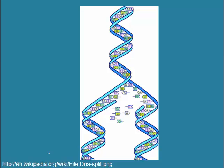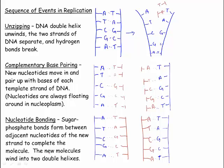There are three steps to DNA replication: unzipping or unraveling of the molecule, complementary base pairing, and nucleotide bonding. Here's a closer look at what happens.